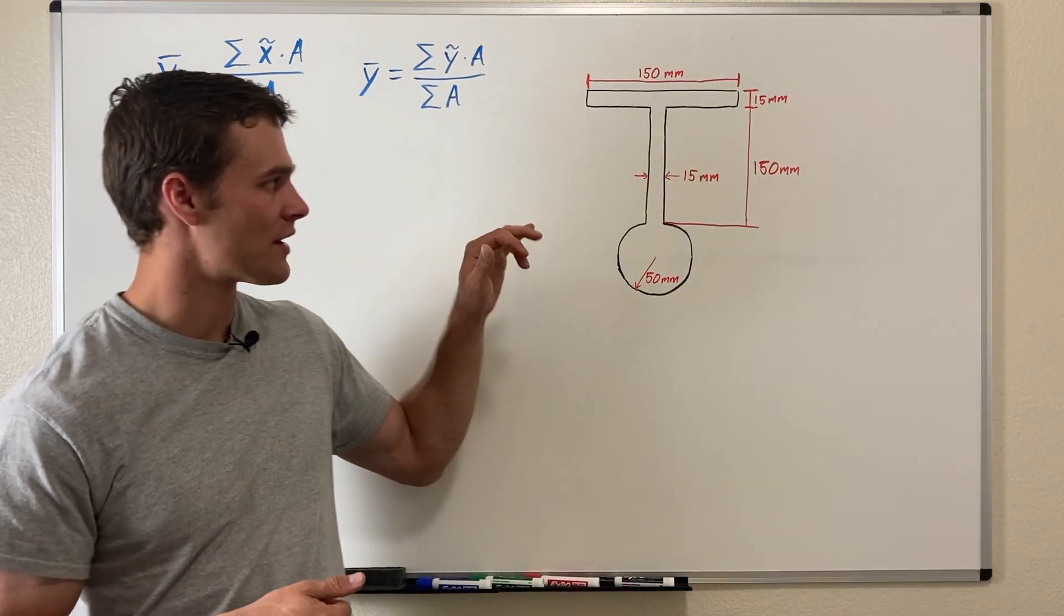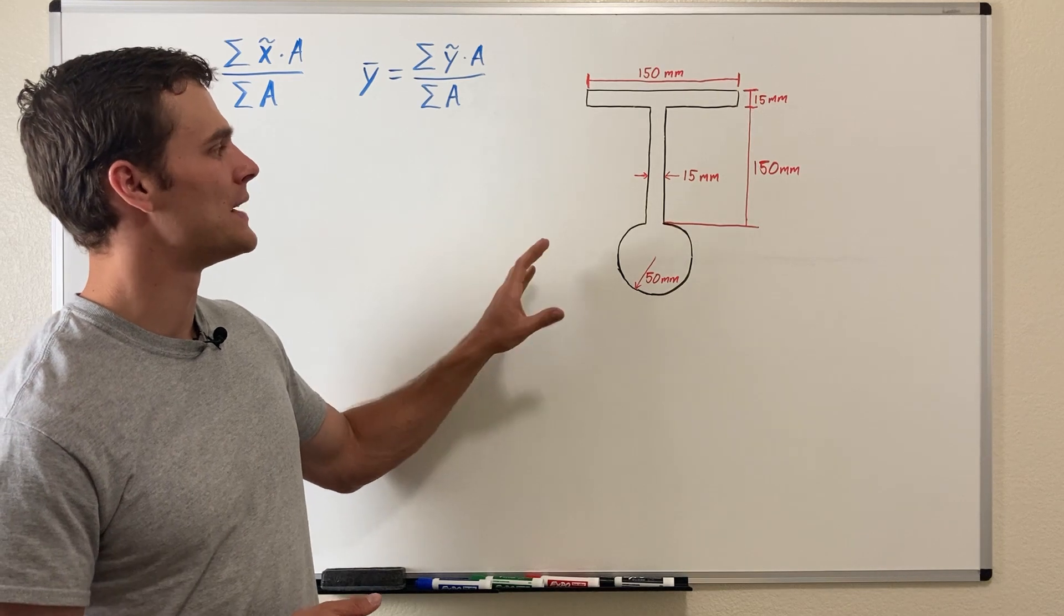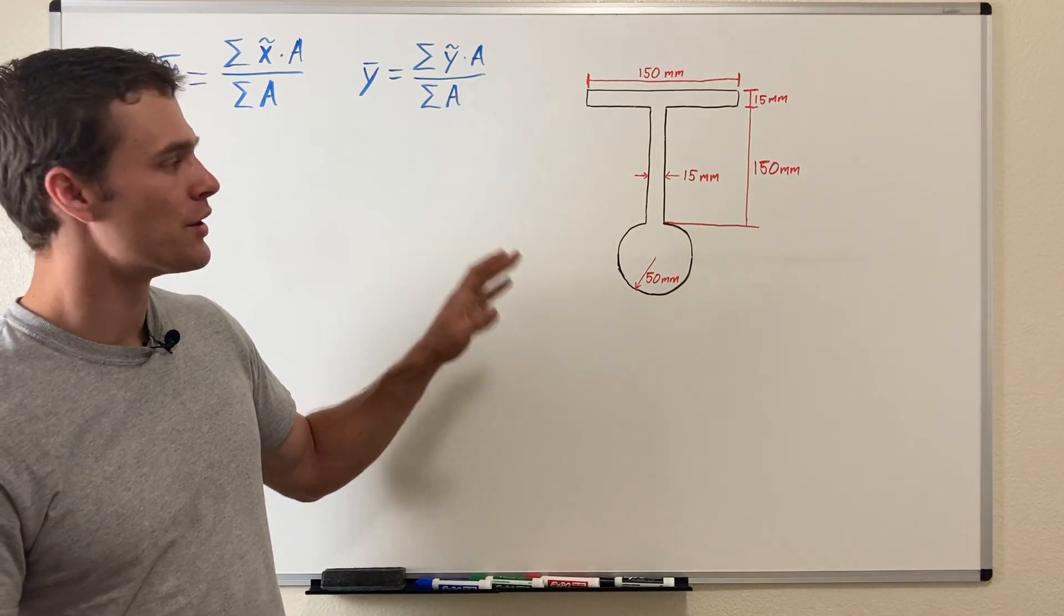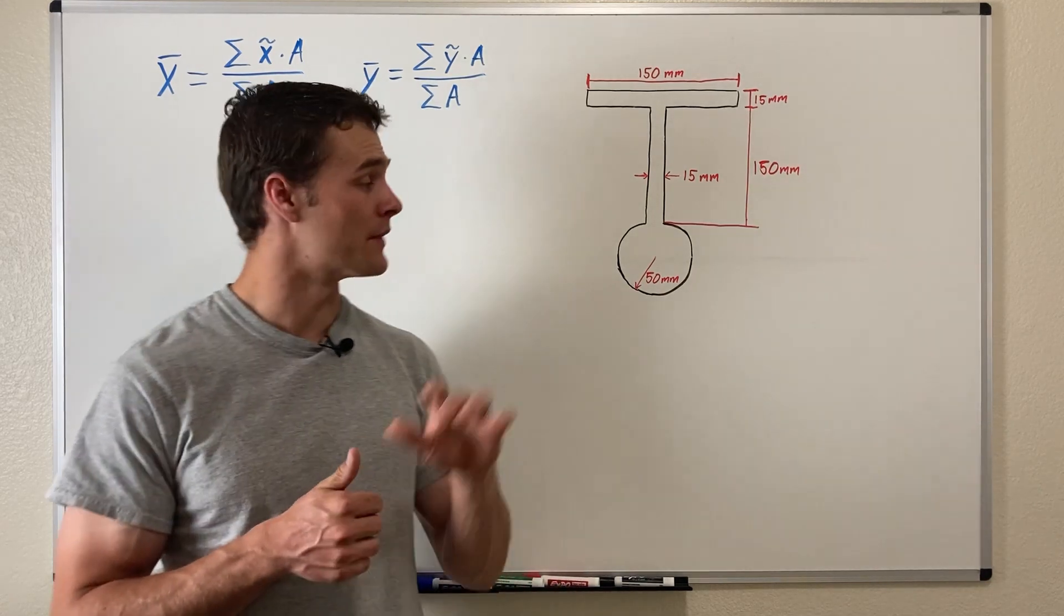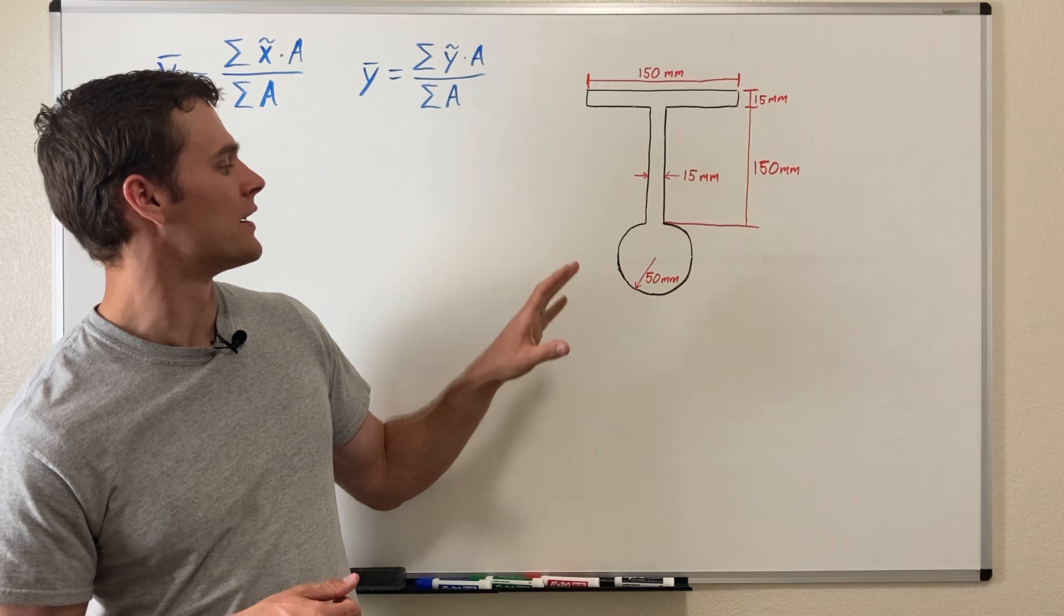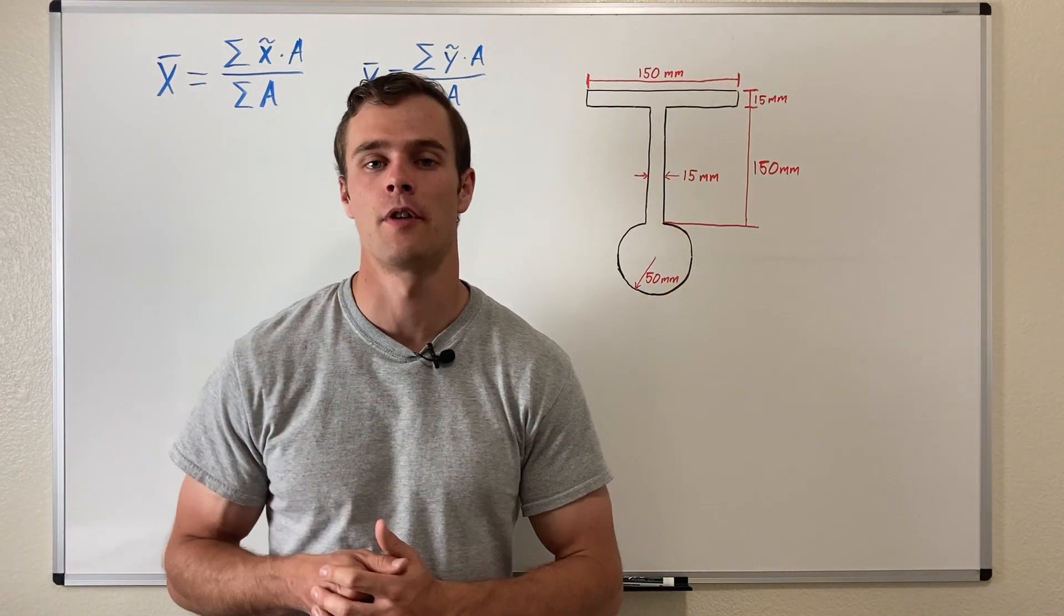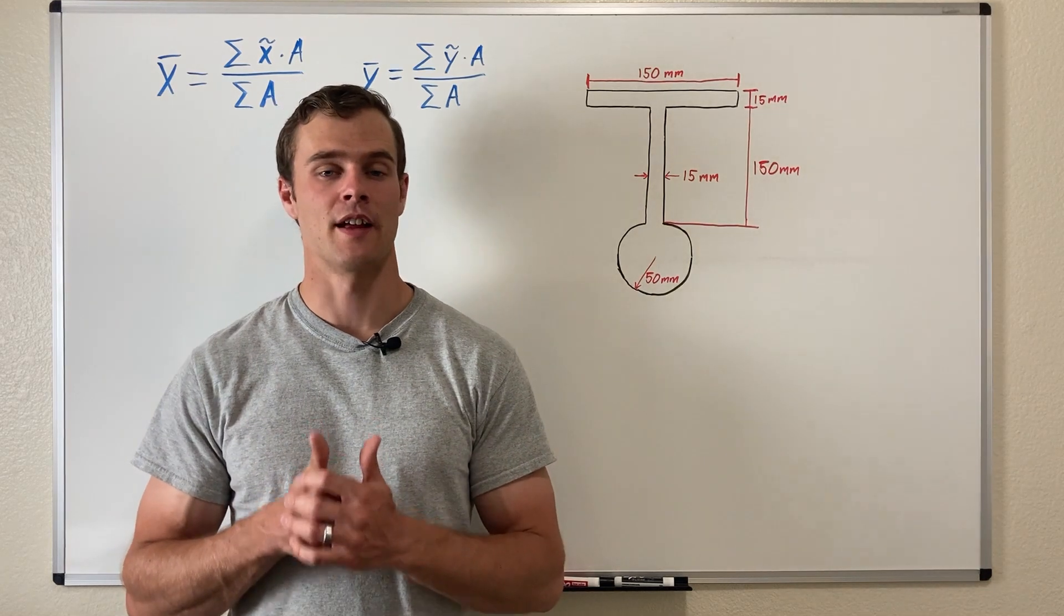What we have here is the cross section of an oddly shaped beam. We're going to find the centroid of this cross section, and the odd shape gives us a little bit of variety in this example.